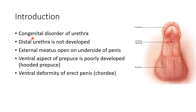Hypospadias is a congenital disorder of the urethra. The distal urethra is not developed properly, so the external meatus opens on the underside of the penis. The ventral aspect of the prepuce is also poorly developed, leading to hooded prepuce. Patients with hypospadias also have a ventral deformity of the erect penis, known as chordee.